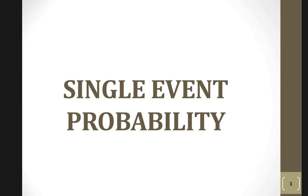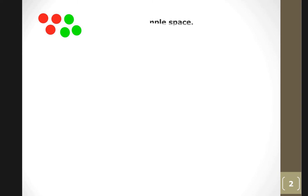Single event probability. Let's say there are three red marbles and three green marbles in a jar. We're going to answer some questions. First of all, what is the sample space for this?